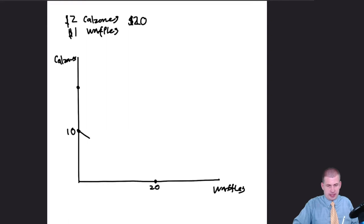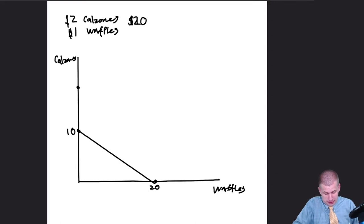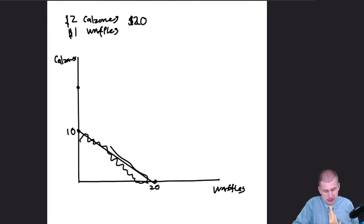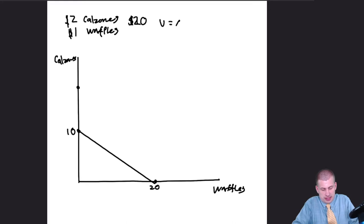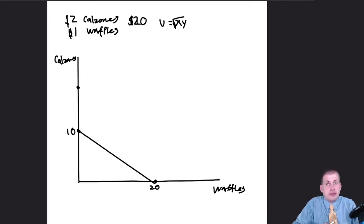So we draw a nice budget line from 10 to 20. That's what we can purchase — we could buy 9 calzones and 2 waffles, or 18 waffles and 1 calzone, or any combination along this line. Where we actually consume depends on the shape of our indifference curve. In the utility maximization example I gave you a utility function and we used math to find where the indifference curve was tangent to the budget line.